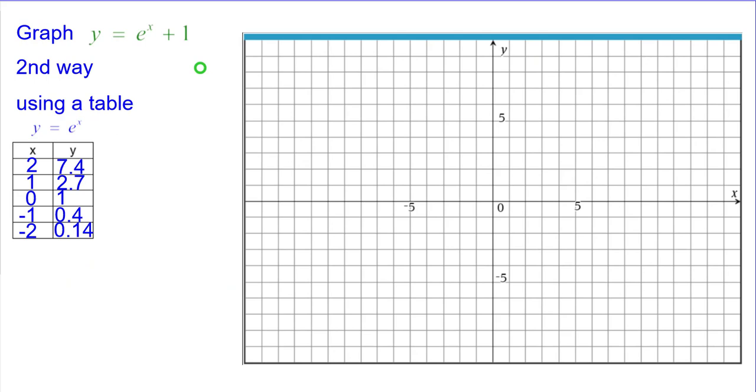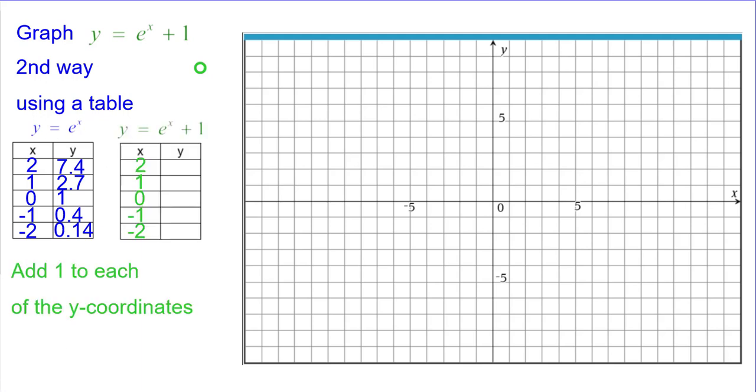A second way would be using a table. These are our five key points on a y equals e to the x graph. So we're going to add 1 to each of the y coordinates.